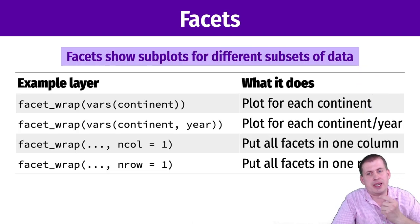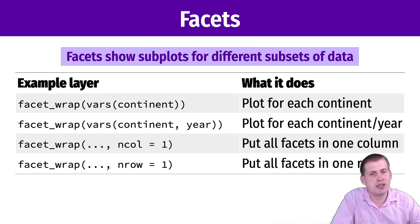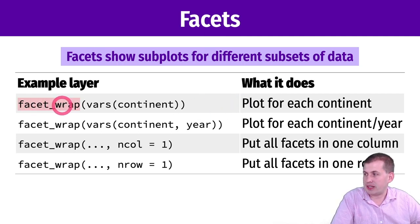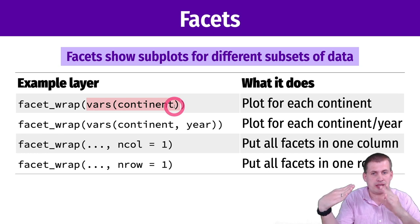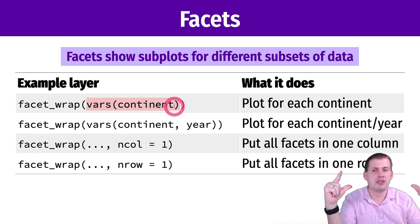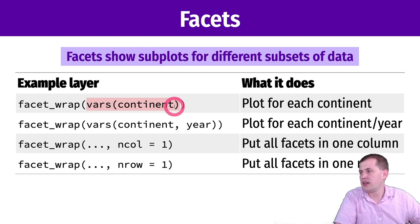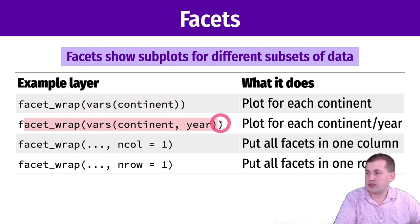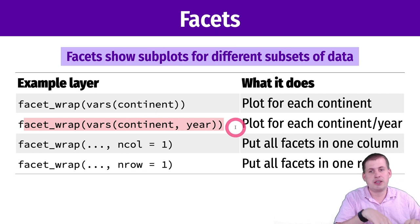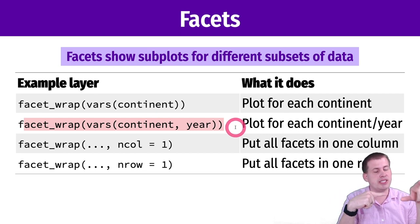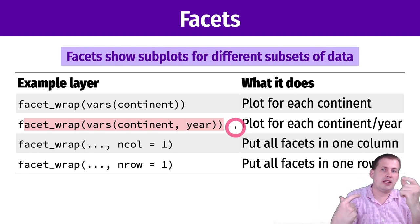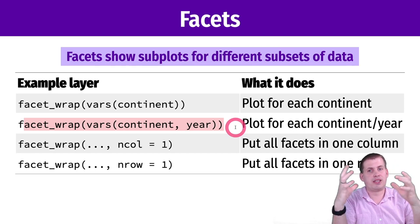Facets are another layer we can add as part of the grammar of graphics. This creates subplots based on one of the columns in our data set. If you add facet_wrap and facet by continent, it separates the single plot into five separate smaller plots, one for each continent. You can also facet by multiple things — for example, faceting by continent and year creates mini-plots for every combination, though that can get unwieldy with dozens of plots.